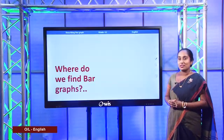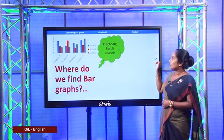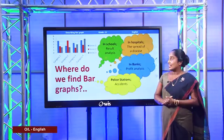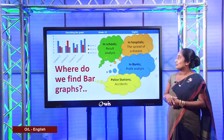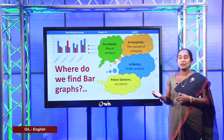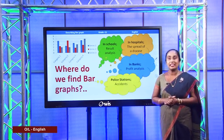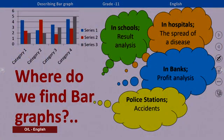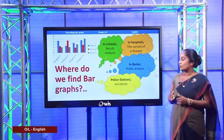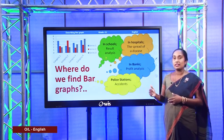Where do we find bar graphs? We can find bar graphs in schools, hospitals, banks, and police stations. In schools we use bar graphs to analyze results — scholarship examinations, O Level and A Level examinations. In hospitals we use bar graphs to show the spread of diseases like dengue and nowadays corona. In banks we use them to analyze profits, checking whether profit is going up or down. In police stations we use them to show the rate of accidents.